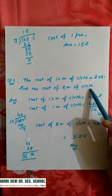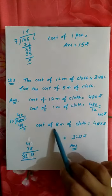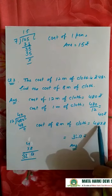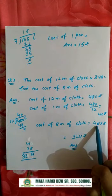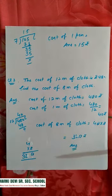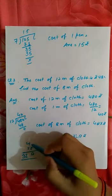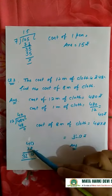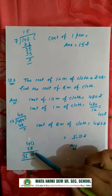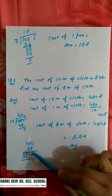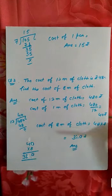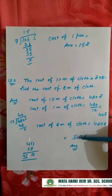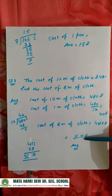So cost of eight meter of cloth is equal to 40 multiply 8. So 40 times 8: 0 times 0, then 8 fours is 32. So students, the cost of eight meter of cloth is three hundred twenty rupees.